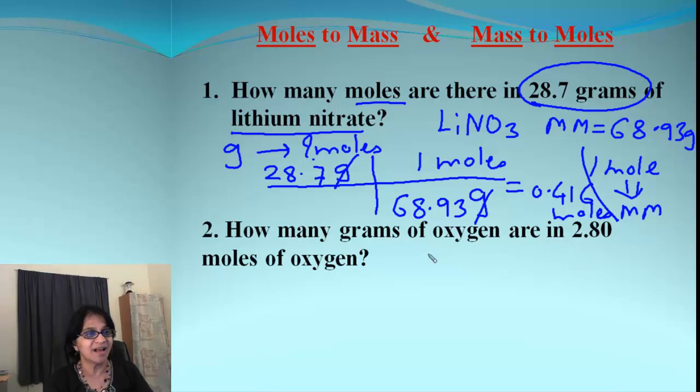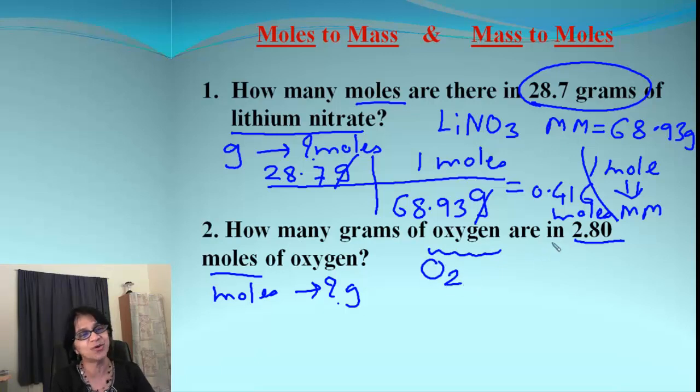This is moles to grams because we have been given 2.80 moles. That's my roadmap. Moles to grams. The molecule is oxygen. And I want you to remind, that is a diatomic. So we write as O2. That means the molar mass for oxygen will be 2 times the atomic mass of 1 atom of oxygen, which is 16. So that is 32 grams.